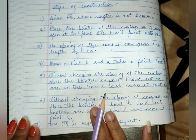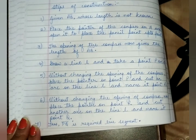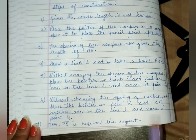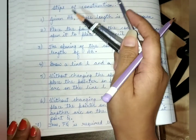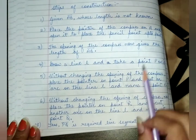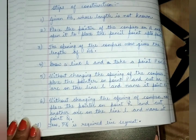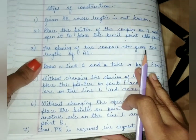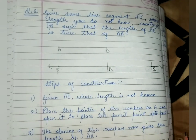Now for the steps of construction — you can write it in your own language, but it needs to be proper. Place the pointer on A, open to B to get the length of AB. Draw line L, take point P, cut arc at R, then place pointer on R and cut another arc at Q. Thus PQ is the required line segment, twice the length of AB. This was exercise 14.3 — I hope it is clear to you.